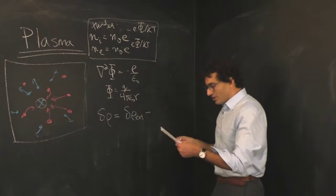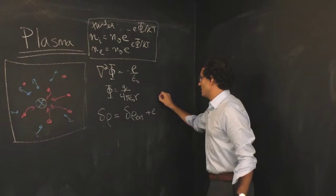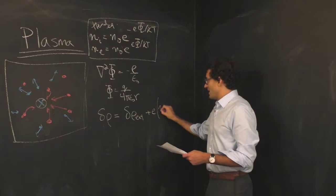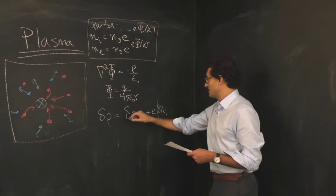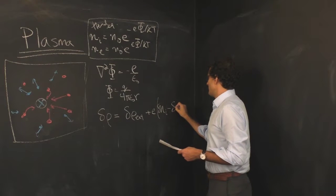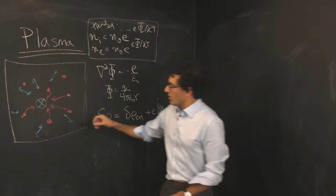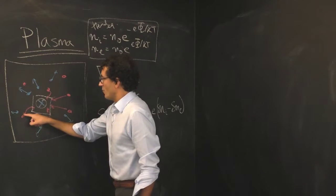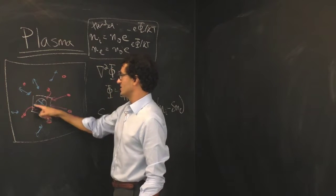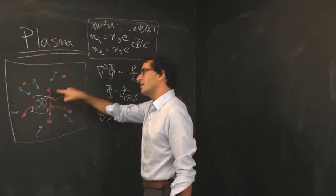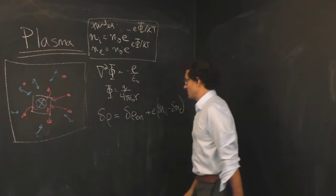The total charge that's added to the system because of the rearrangement of the plasma equals the electron charge times the density of ions that have been introduced minus the density of electrons that have been introduced because of that charge. We'll have an over-density of positive charges and an under-density of negative charges in that part of the plasma.